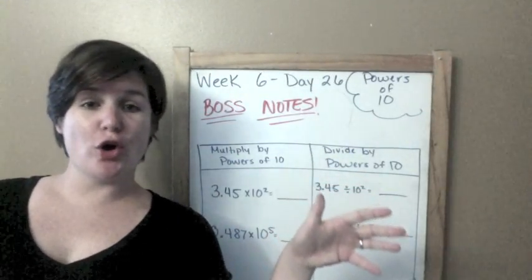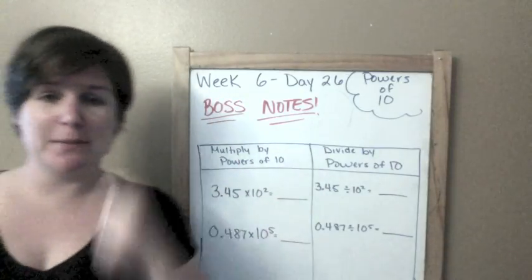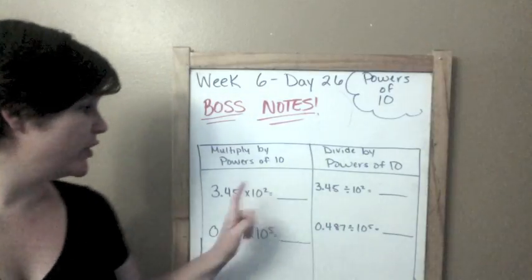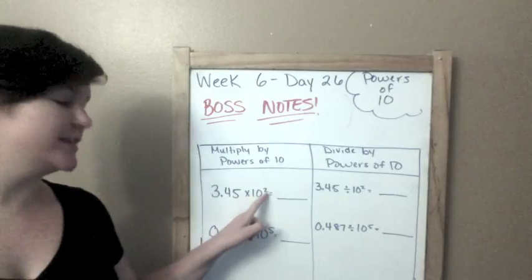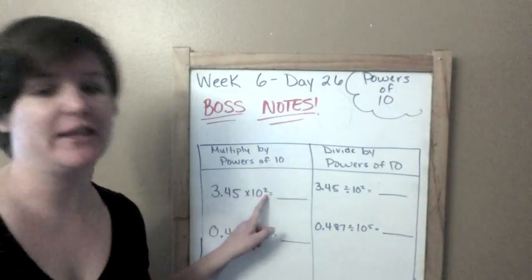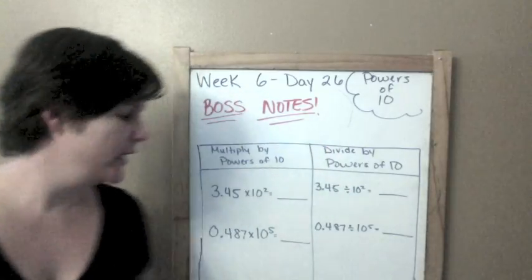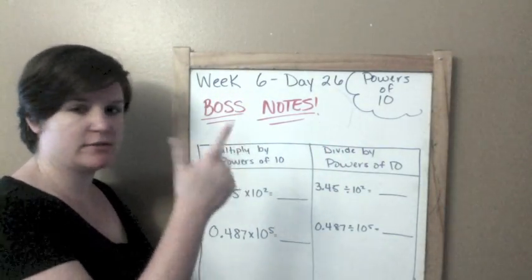Boss notes! We are going to be multiplying and dividing by powers of 10. What are powers of 10? They're the number 10 with little exponents. So if you see 10 to the second power, that would be 10 times 10. If you see 10 to the fifth power, that's 10 times 10 times 10 times 10 times 10.